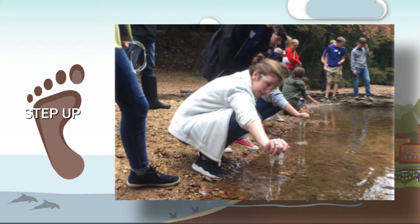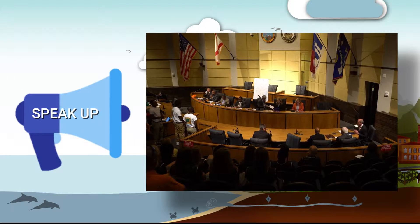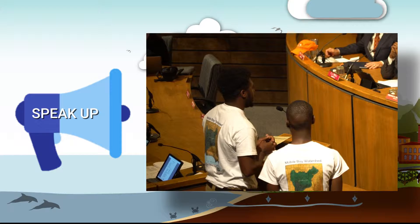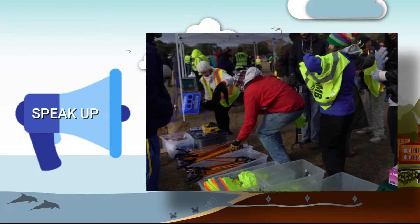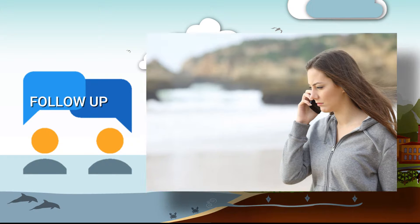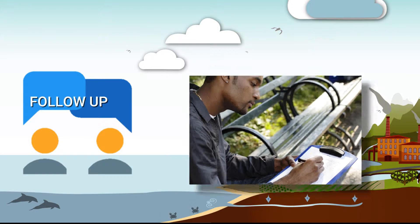Volunteer in cleanups and water quality monitoring programs. If you see something, say something — report issues to your municipal government. Attend your city council meetings and organize cleanups in your neighborhood. When you report an issue, check back to make sure actions were taken. Follow up with local government officials. After cleanups, identify ways of preventing trash from polluting that area in the future.